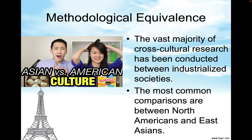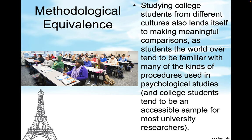The vast majority of cross-cultural research has been conducted between industrialized societies. The most common comparisons are between North Americans and East Asians — the Chinese, the Koreans, and the Japanese. Studying college students from different cultures lends itself to making meaningful comparisons, as students the world over tend to be familiar with many of the kinds of procedures used in psychological studies. College students tend to be an accessible sample for most university researchers, and they are cheap.